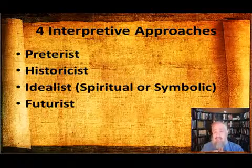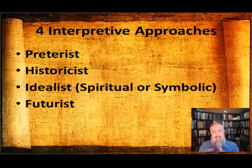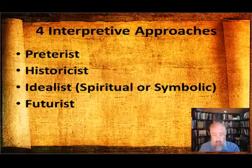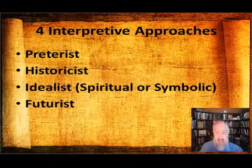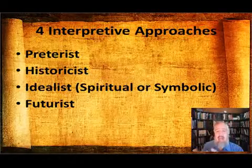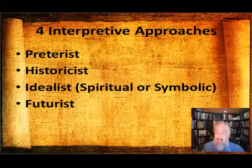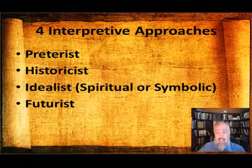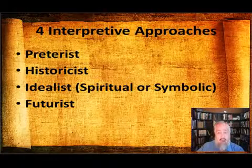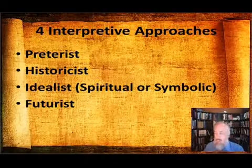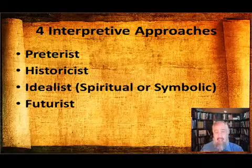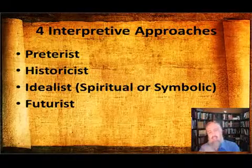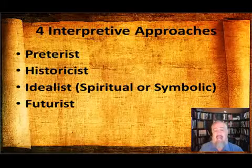Then there's the Idealist or Symbolic view, which believes that the events mentioned in the book of Revelation will not happen in a historical manner — they never will occur — but that they are symbolic of the kind of struggles that Christians go through throughout the ages. And then lastly, there's the Futurist view: the belief that most of the events of the book of Revelation are all in the future. They will take place during the seven years of the Great Tribulation, and then be fulfilled with the millennial reign and the consummation at the end of the age. They also have great charts showing the chronological movement of the entirety of the book.